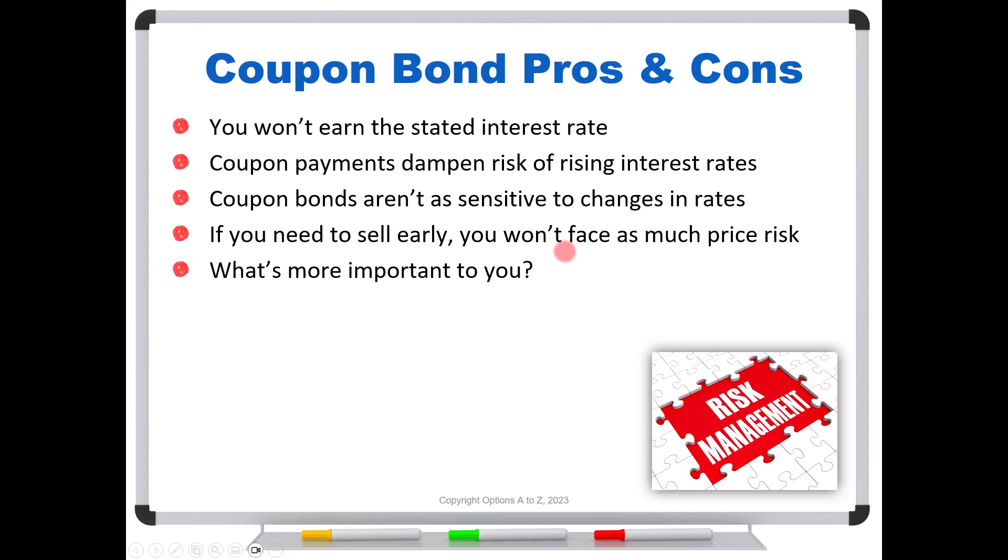You simply have to ask, what's more important to you? Is it about getting the 5% or the 6%? If that's really what you need to meet that goal, then you're probably going to have to go with a zero-coupon bond. On the other hand, if you're saying 5% or something close to it will help me meet my goals, but I can see a possibility where I might need to sell early, in those cases you might want to lean towards a coupon bond.